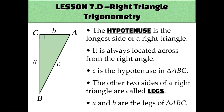Let's review what a hypotenuse and legs are, and then we'll expand on that idea. The hypotenuse of a right triangle is always the longest side — it's the side across from the right angle. The other two sides are called legs; they're the sides that create the right angle. Today we'll learn that the legs will have special names depending on which vertex you're focusing on.